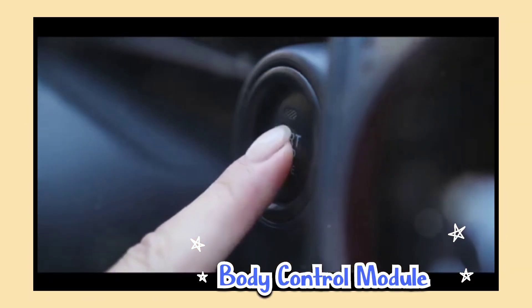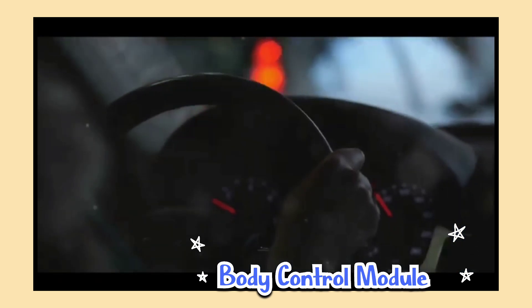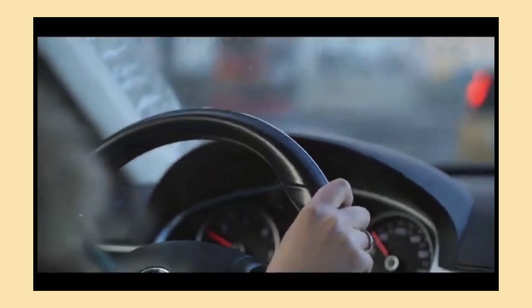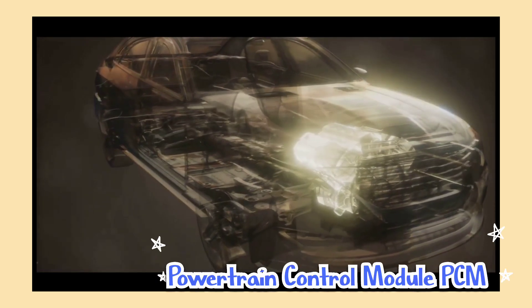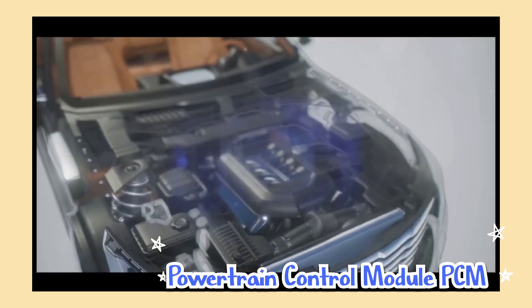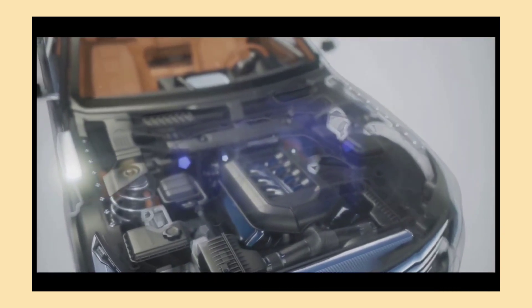Body control module (BCM): it controls lights, windows, and other non-engine functions. Powertrain control module (PCM): a combination of the ECM and TCU, overseeing both engine and transmission functions.